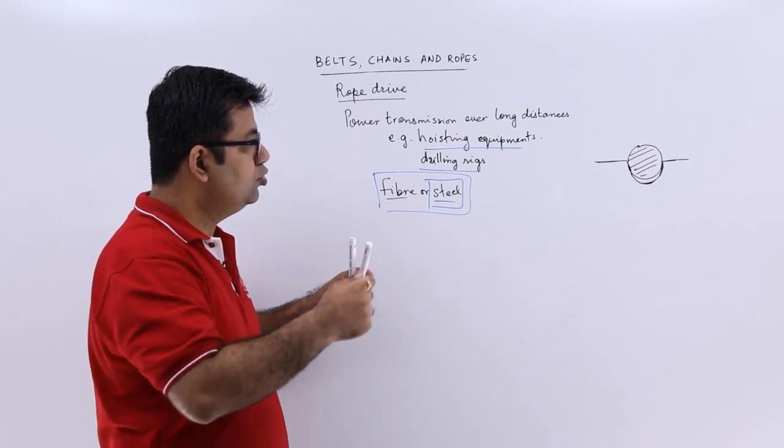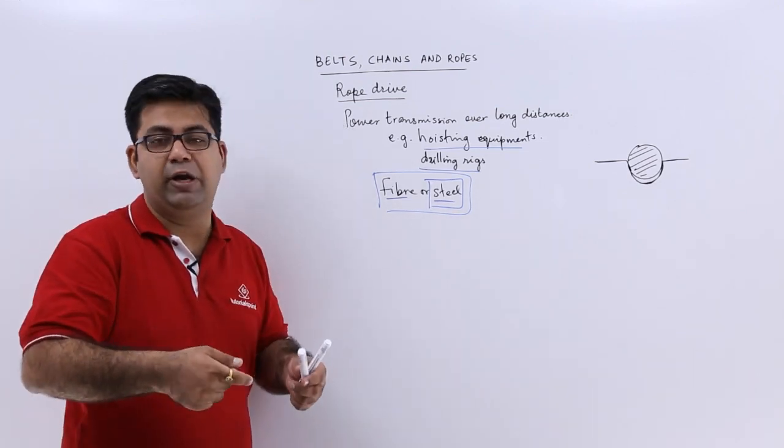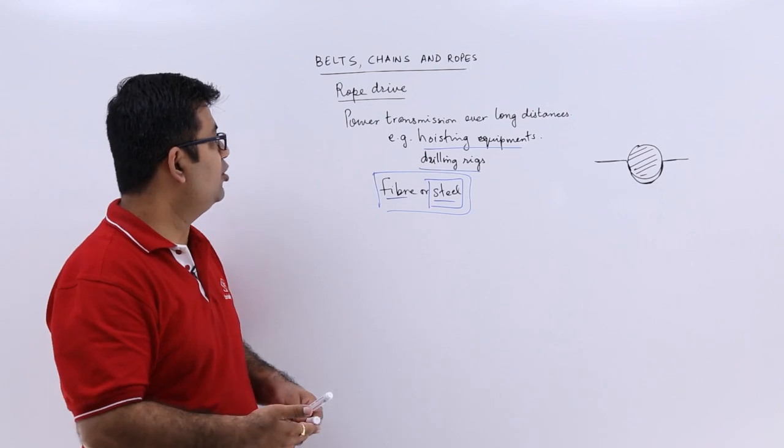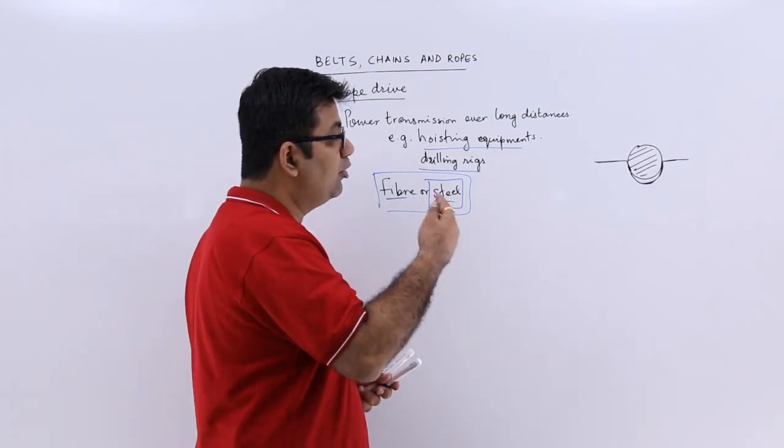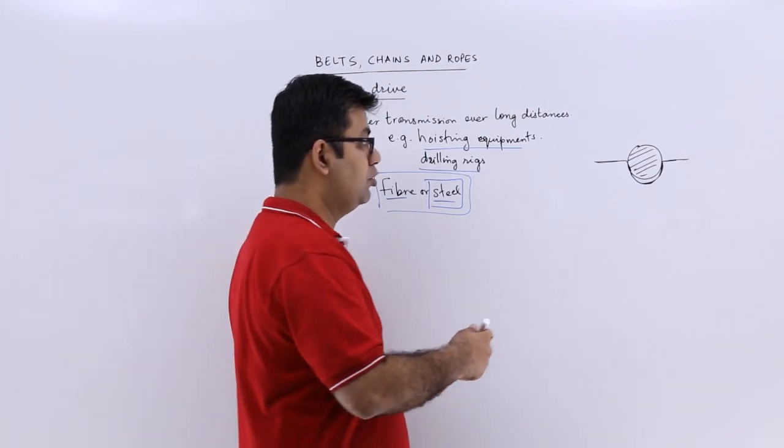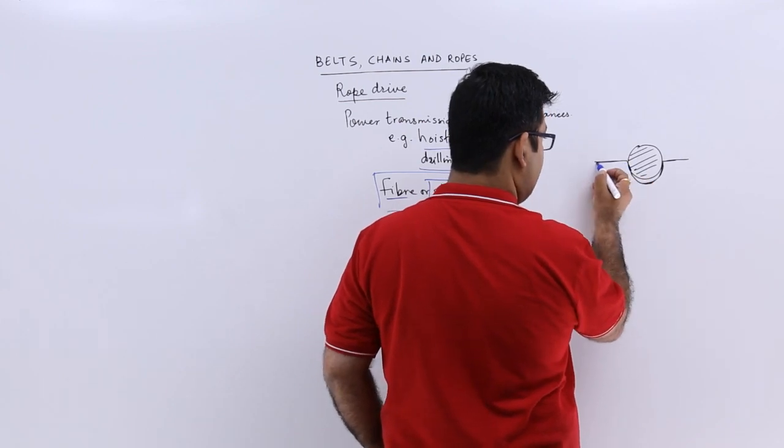Now to actually run a belt system you need a pulley. To run a rope system you also need a grooved pulley. You see this groove over here, this groove.